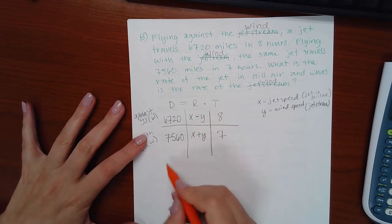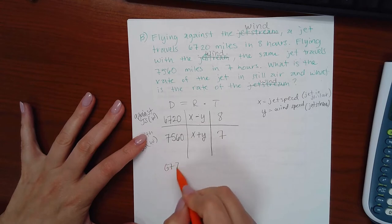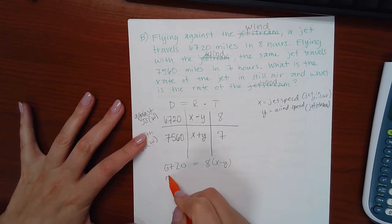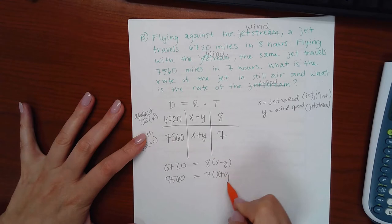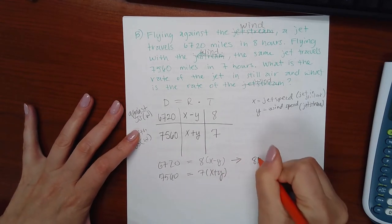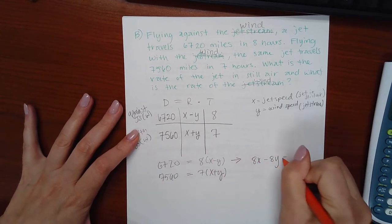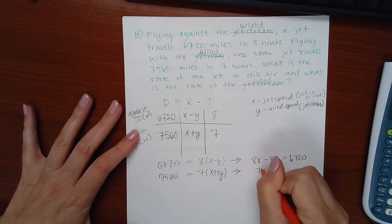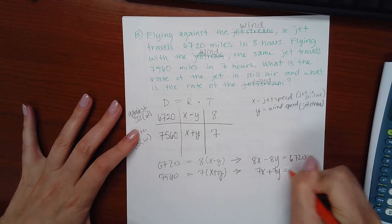So remember, to get these, you have to do 6720 equals eight times my rate is seven times this rate, which could be 8X minus 8Y equals 6720. 7X plus 7Y equals 7560.